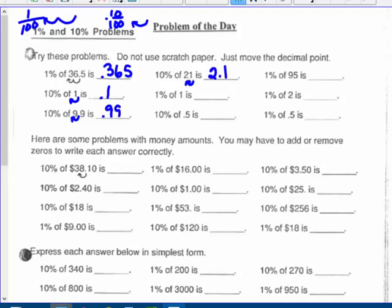1% of 1, dividing by 100, 2 left, you'd get 0.01 or 1/100. 10% of 1/2 or 0.5, 10% moving 1 to the left, you'd get 0.05. 1% of 95, divide by 100, and you'd get 0.95.